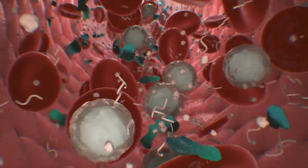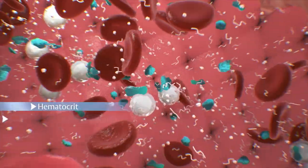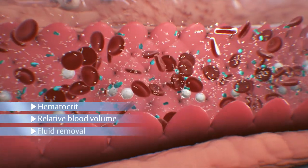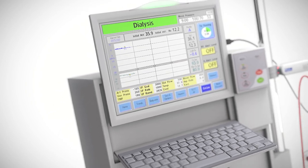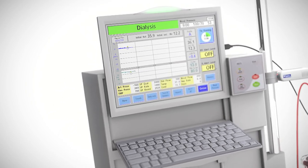During hemodialysis, critical blood parameters such as hematocrit, relative blood volume, fluid removal by ultrafiltration, and oxygen saturation can be monitored to help limit common intradialytic symptoms such as dizziness, cramping, and vomiting.